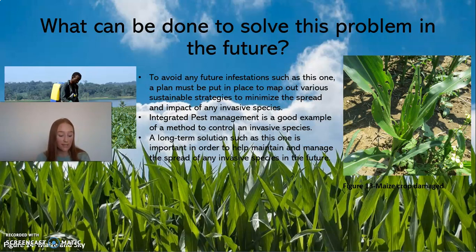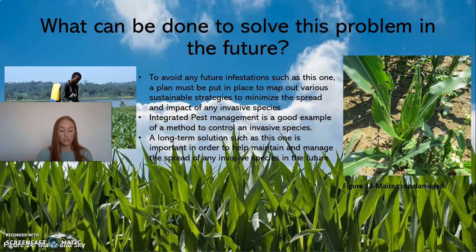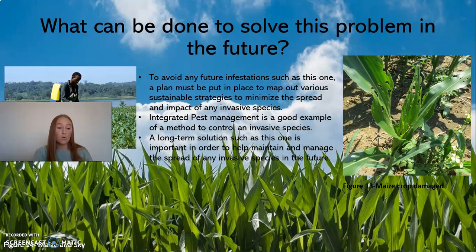To avoid future infestations such as this one, a plan must be put in place to map out various sustainable strategies to minimize the impact of any invasive species. Integrated pest management is a good example of a method to control invasive species, as it uses a combination of control methods that are sustainable, cost effective, and low risk to humans and animals. A long-term solution such as this is important to help maintain and manage the spread of any invasive species in the future.